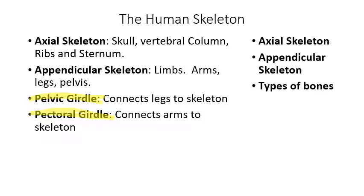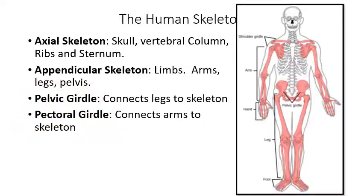The pelvic girdle is located near the pelvic compartment. The pectoral girdle — 'pectoral' refers to the upper chest — is where the arms connect to the axial skeleton at the shoulders. The technical term for the shoulder girdle is the pectoral girdle, and the hip joint connection of the legs to the axial skeleton is called the pelvic girdle.